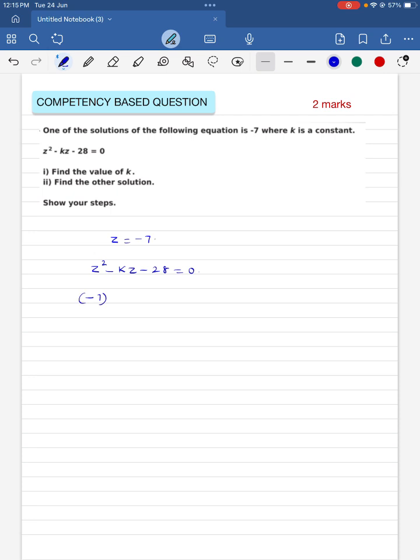So let me substitute, instead of z let me replace with minus 7. Minus 7 squared minus k times minus 7 minus 28 equal to 0 which would give me 49 plus 7k minus 28 equal to 0. So that's 7k plus 21 equal to 0. So 7k becomes equal to minus 21 and the value of k becomes minus 3.